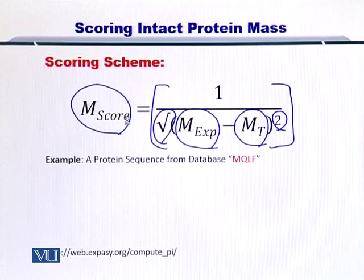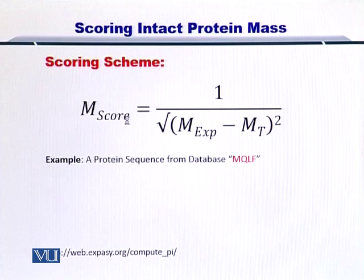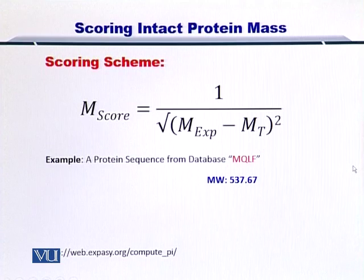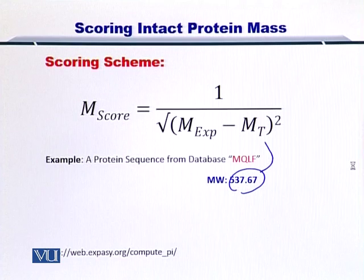Here is an example. If you have a protein sequence from the protein database such as UniProt, you can simply add up the molecular weights of the amino acids to arrive at the whole protein molecular weight. There is an online tool given at the bottom that you can also use. You can then compare this mass with the mass from the experiment and therefore score the protein. In this way, you can obtain scores for all the proteins in the protein database.